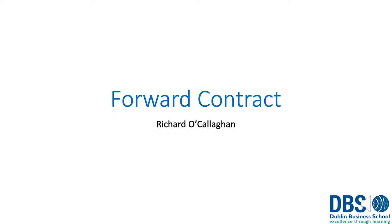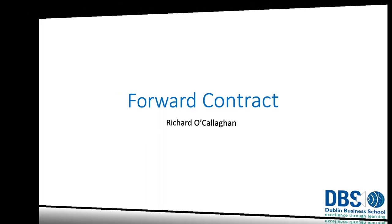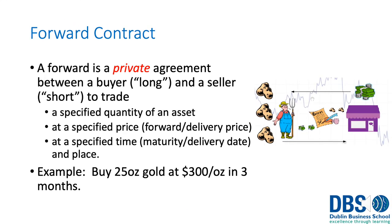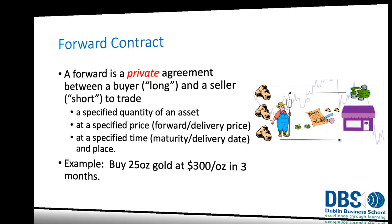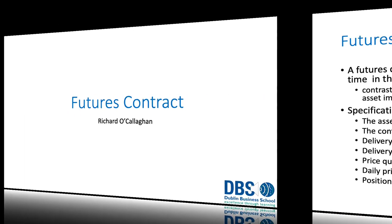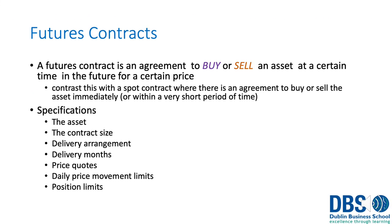The first type of derivative we're going to talk about is the forward contract. A forward is a private agreement between a buyer and a seller to trade a specific quantity of an asset at a specified price and at a specified time. For example, we might agree to buy a specific weight of gold at $300 an ounce, and we're going to pay that amount in three months' time.